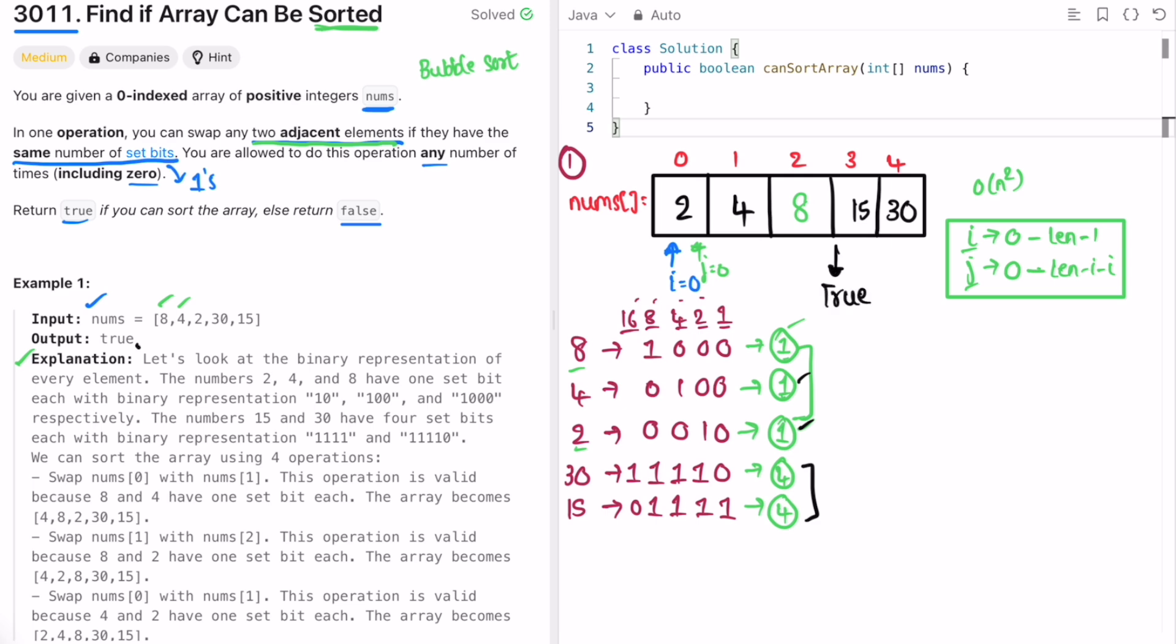We return true as the output which is expected here. Now let's implement the same steps in a Java program. I'm going to write a helper function. I'm going to name it getSetBits which will take an integer and return us how many bits are set, that is the count of 1s. And this function I'm going to implement using bubble sort and place this check on i and j elements.